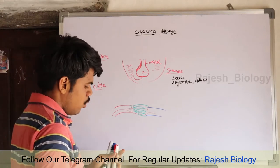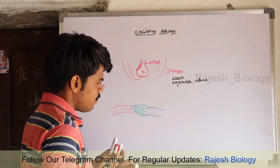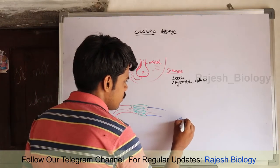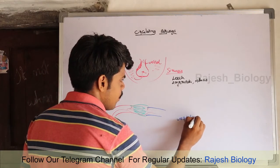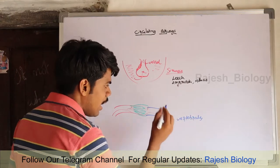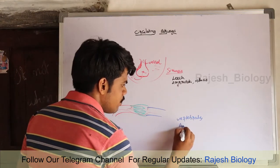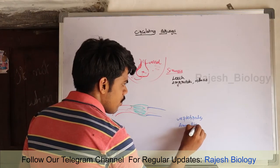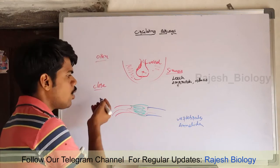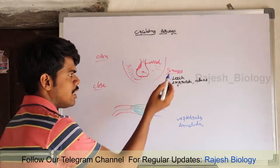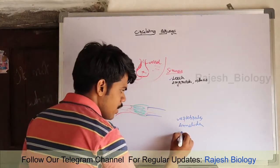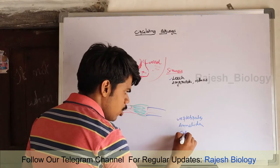Examples of closed type of circulation: all vertebrates, and Annelida show closed type of circulatory system.